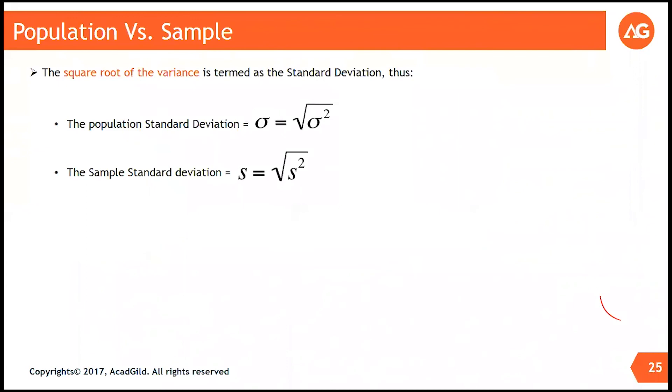As already discussed, the standard deviation sigma is root of the variance for the population. And the sample standard deviation is denoted as s, which is the square root of the sample variance.